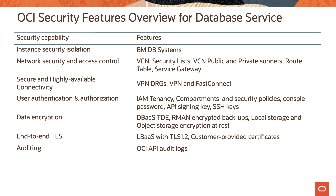If customers want end-to-end TLS for their applications, they can consider using the load balancer service with TLS 1.2 — the customer will need to provide the certificates. Finally, the auditing service logs all activities that happen on the console or via the API, so auditors can see who creates or deletes a particular resource in Oracle Cloud Infrastructure.